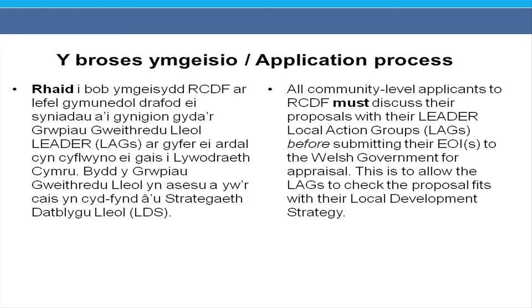All applicants are directed in the scheme guidance to discuss their proposals with the Leader Local Action Group for their area before submitting an expression of interest. The Local Action Groups have funding to engage with communities, build capacity, identify opportunities and barriers, and support pre-commercial piloting of solutions. Potential applicants might benefit from capacity building work, a pilot, or a feasibility study via the Local Action Group, and may also benefit from accessing networks to identify match funding or add value to the project idea.